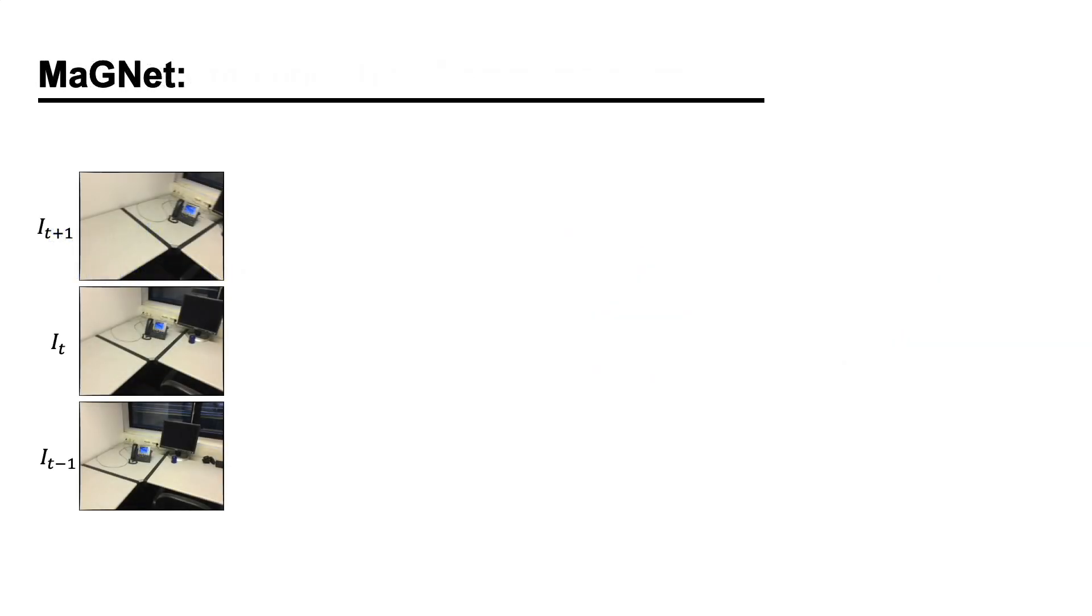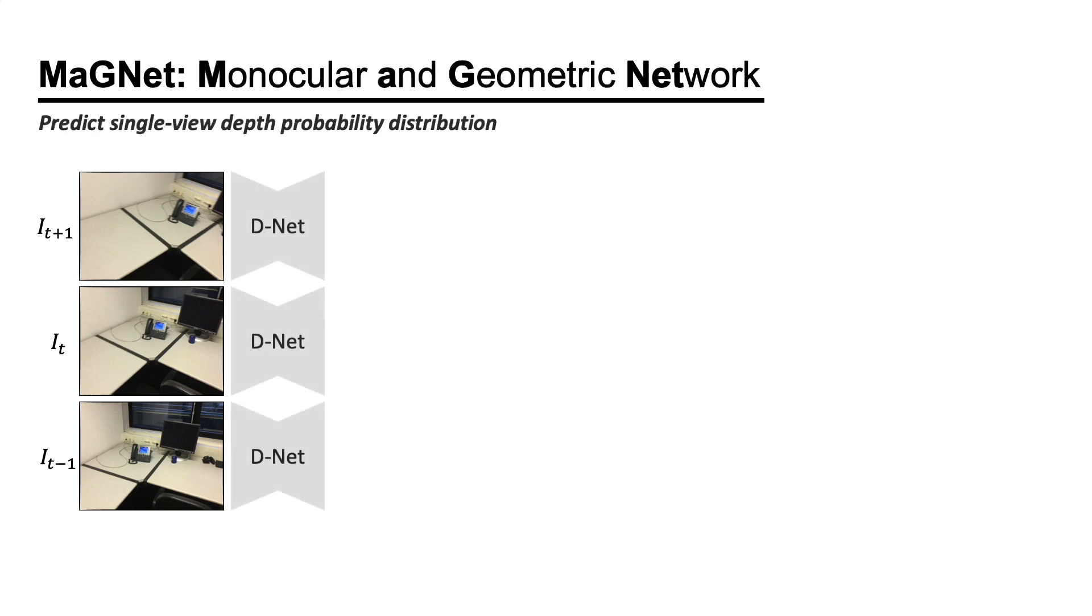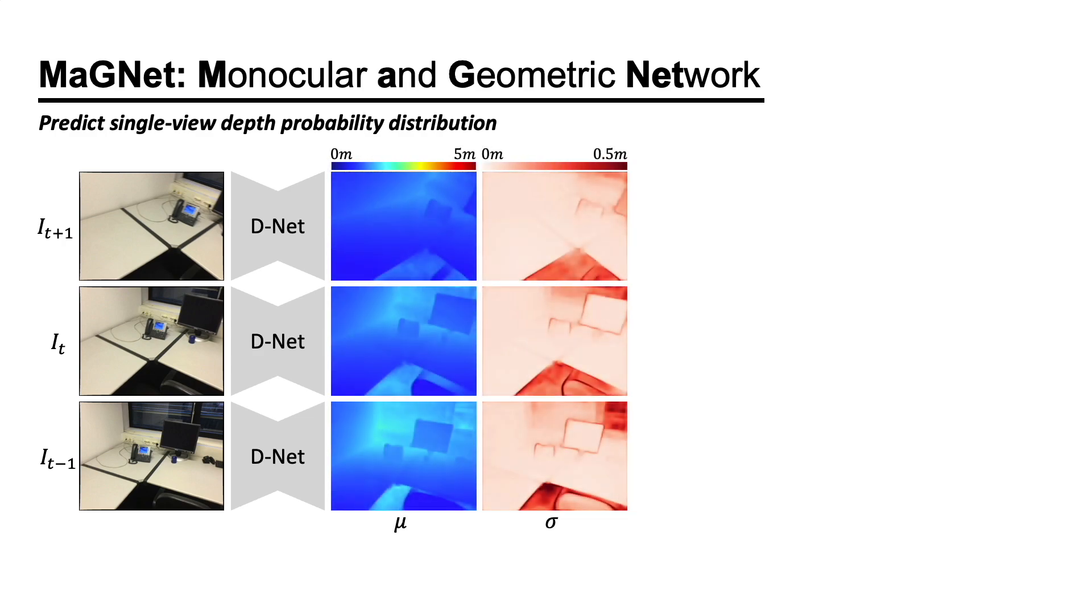To get the best of both worlds, we introduce MaGNet, Monocular and Geometric Network. We use a pre-trained network to estimate the single-view depth probability distribution, parametrized as a per-pixel Gaussian of mean and variance. Our goal is to fuse these single-view predictions with multi-view geometry.